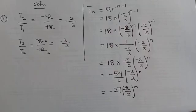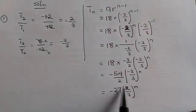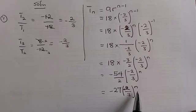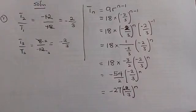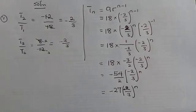This is the nth term of that geometric progression. With this formula, they can ask for the 10th term, the 15th term, or any term at all. You simply substitute the value of n. For instance, for the 10th term, you raise it to the power of 10 to get the result.